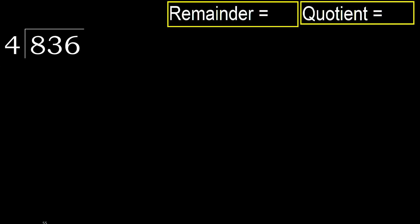836 divided by 4. 8 is not less, so we work with 8. 4 multiplied by which number is nearest to 8 but not greater? 4 multiplied by 3 is 12, which is greater. Multiply by 2: 4 times 2 is 8, which is not greater. Subtract: 8 minus 8 equals 0.